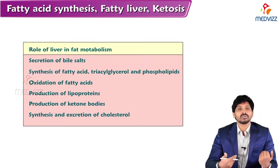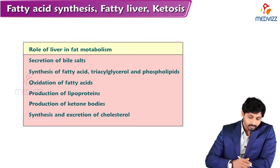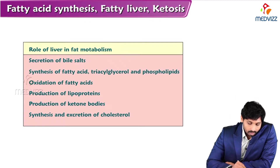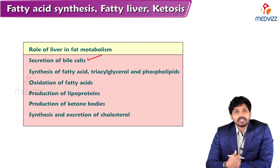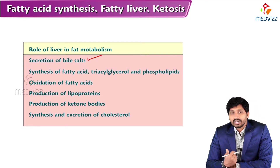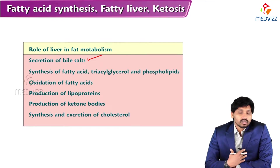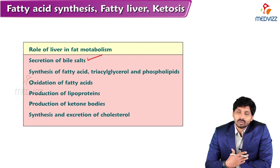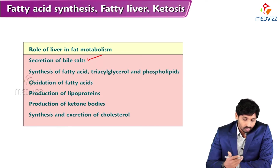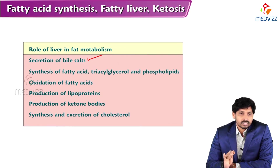What are all the key features of liver in fat metabolism? One is secretion of bile salts. Bile salts are required for emulsification of fats. Without bile salts, the fatty acids in food cannot be digested properly and hence cannot be absorbed. Bile acids released by the liver are required for emulsification of fats.